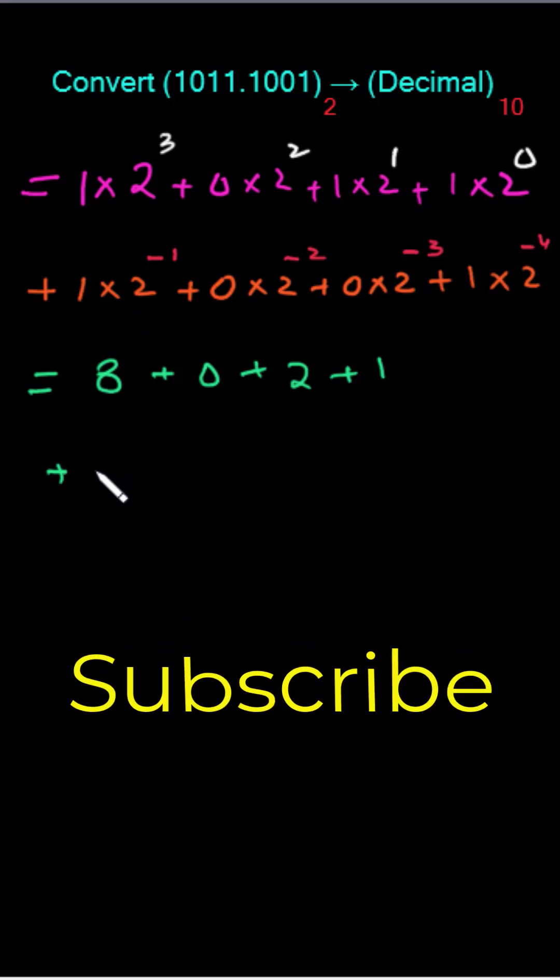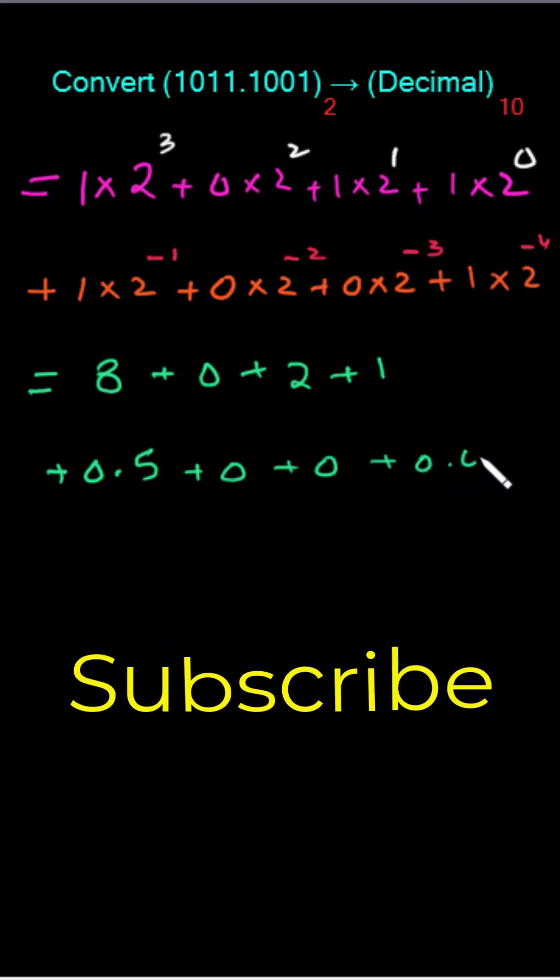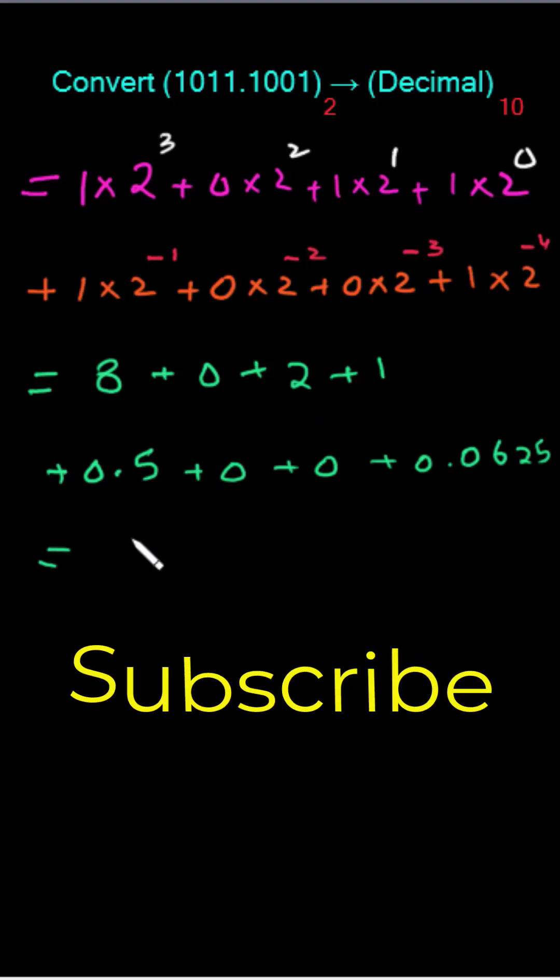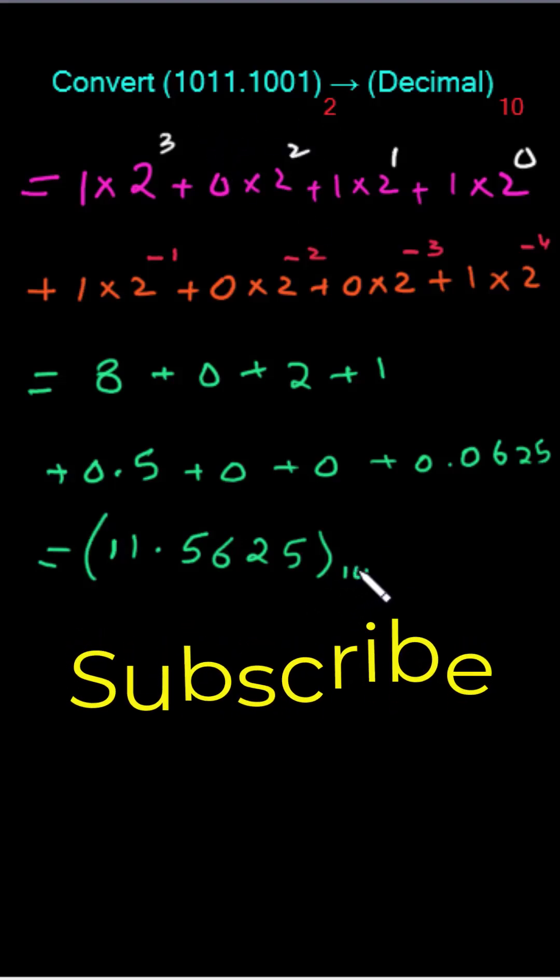Now this is equal to 1÷2 = 0.5 + 0 + 0 + 0.0625. By adding it will give us 11.5625. So this binary number has a decimal equivalent of 11.5625.